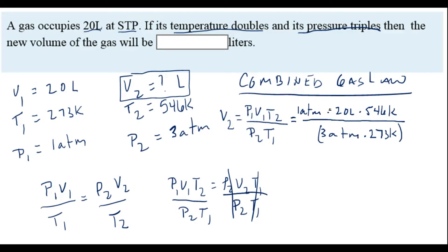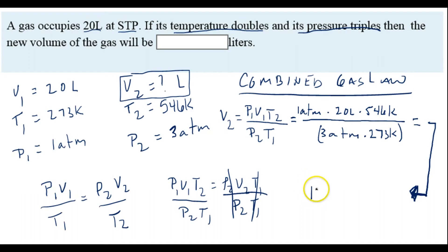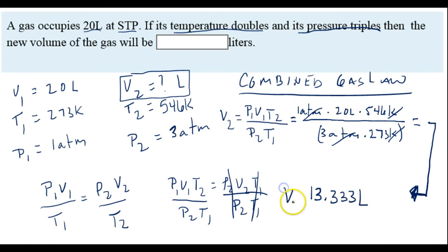We take 1 times 20 times 546, divided by 3 times 273, and we end up with 13.333. The atm units cancel out, Kelvin cancels out, leaving us with liters. So the final volume of this gas is going to be 13.33 liters.